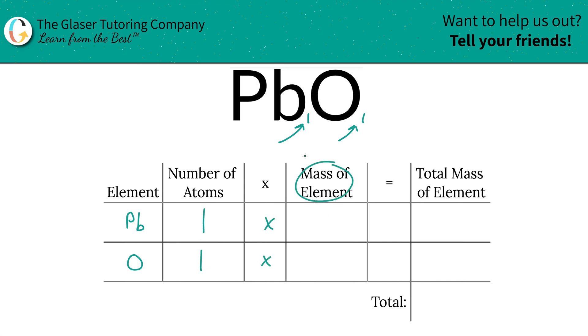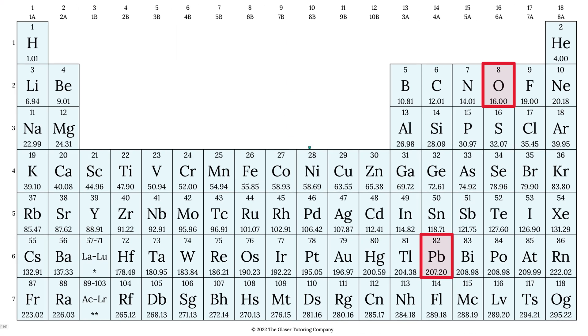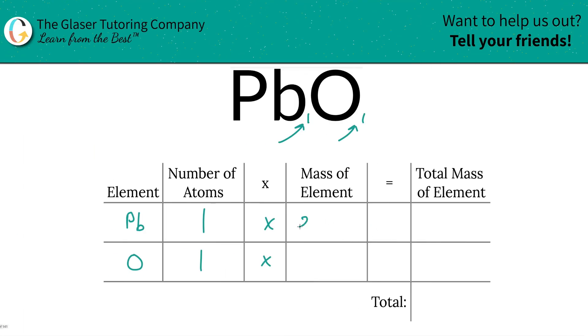Then we're going to simply multiply the number of atoms by the mass of each element. Take a look at the periodic table to help us out. So lead is going to be 207.2, and oxygen is 16. That's what we're going to write in here.